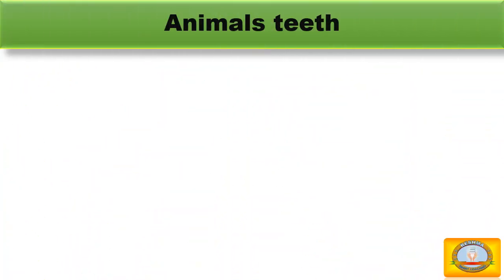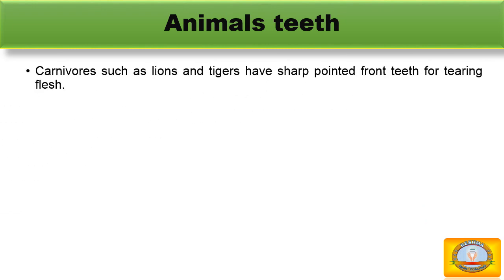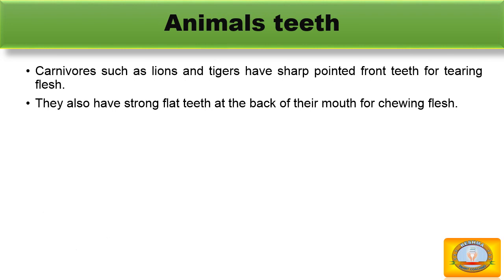Animal teeth. Carnivores such as lion and tiger have sharp pointed front teeth for tearing flesh. They also have strong flat teeth at the back of their mouth for chewing flesh.